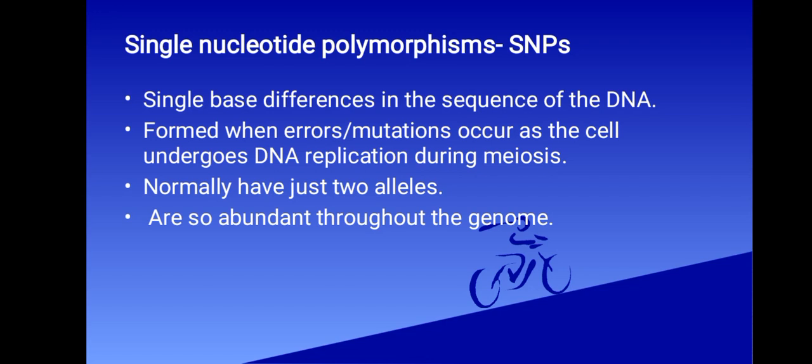However, they are so abundant throughout the genome that it's theoretically possible to type hundreds of them, and this would make the combined power of discrimination very high. It's estimated that to achieve the same discriminatory power achieved using 10 STRs, 50 to 80 SNPs would be analyzed.